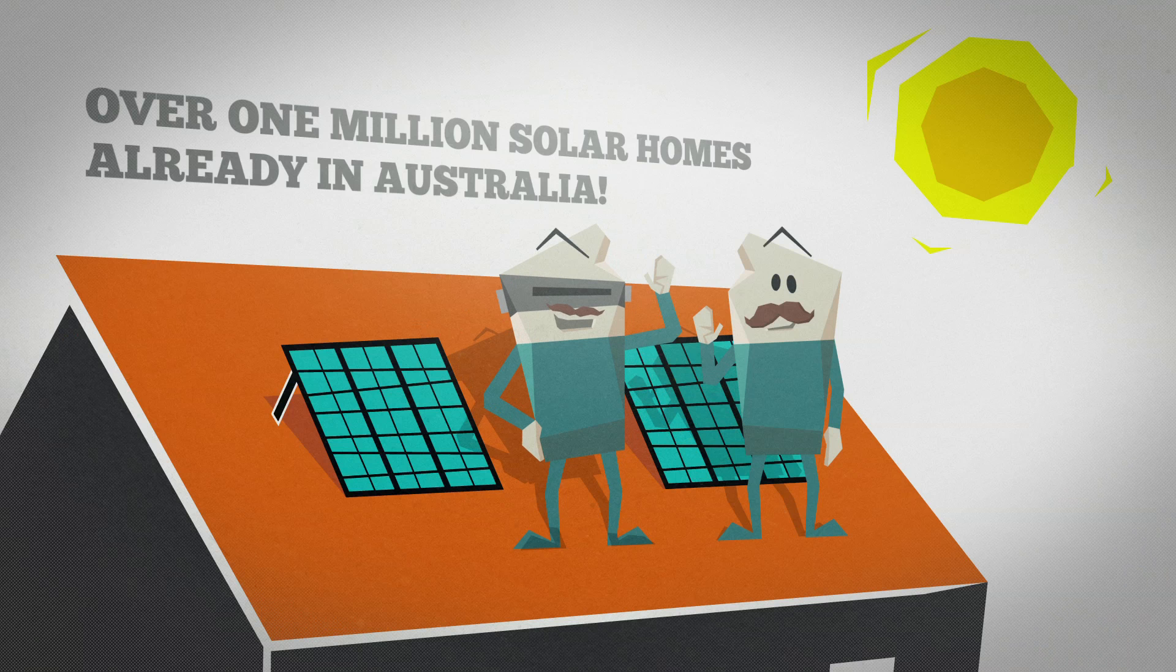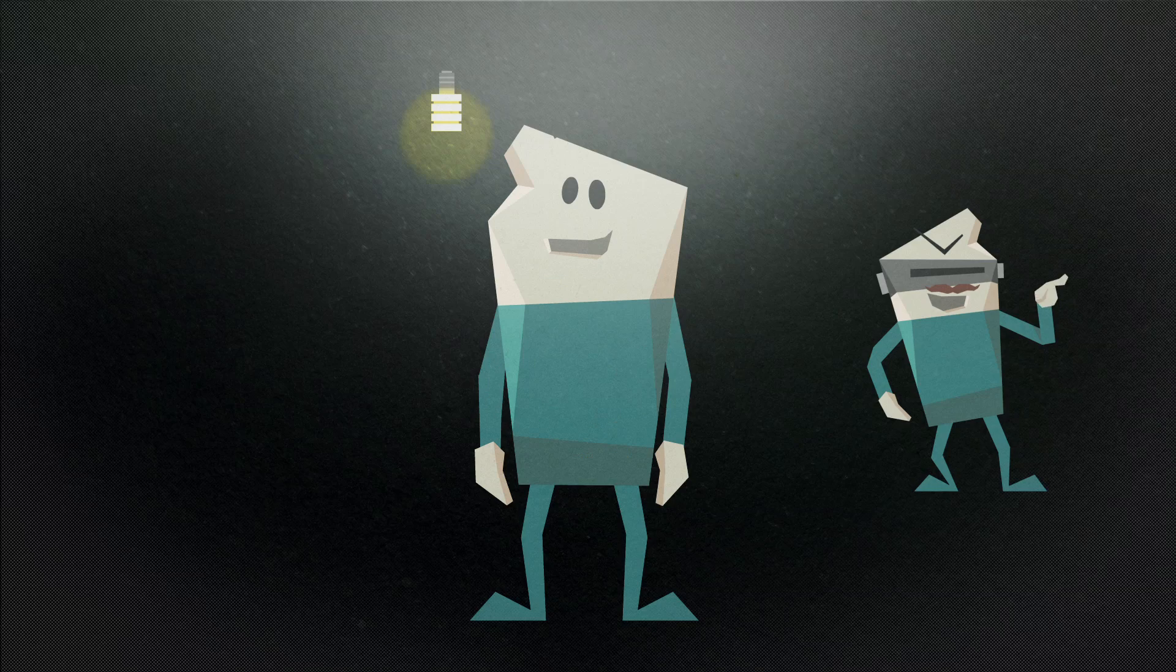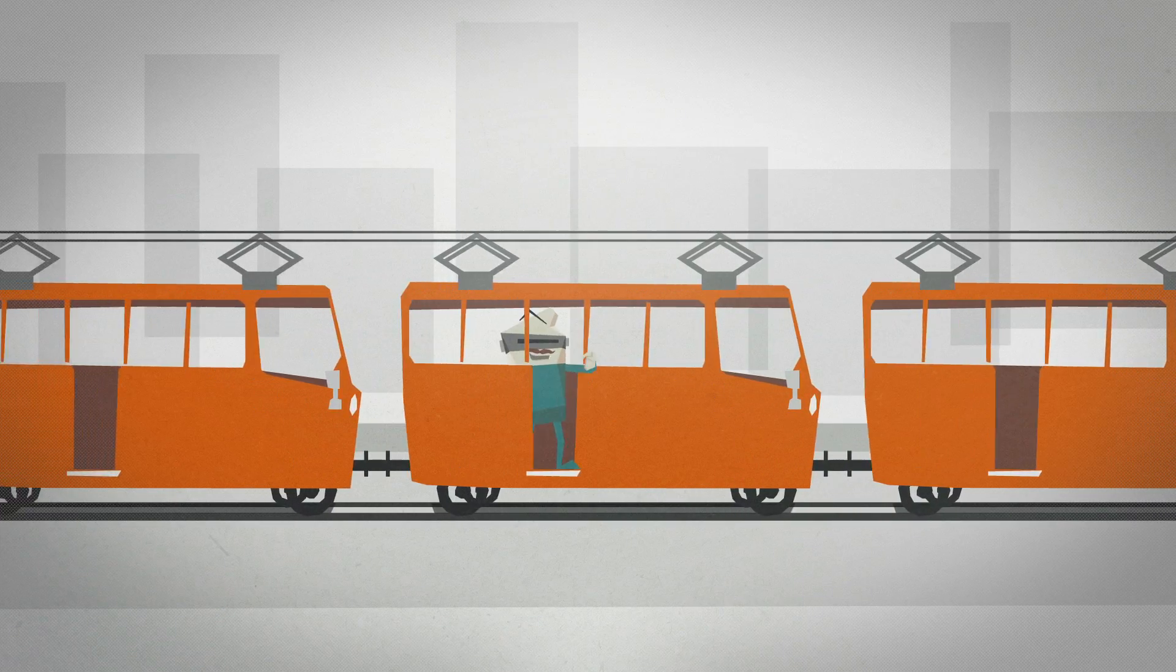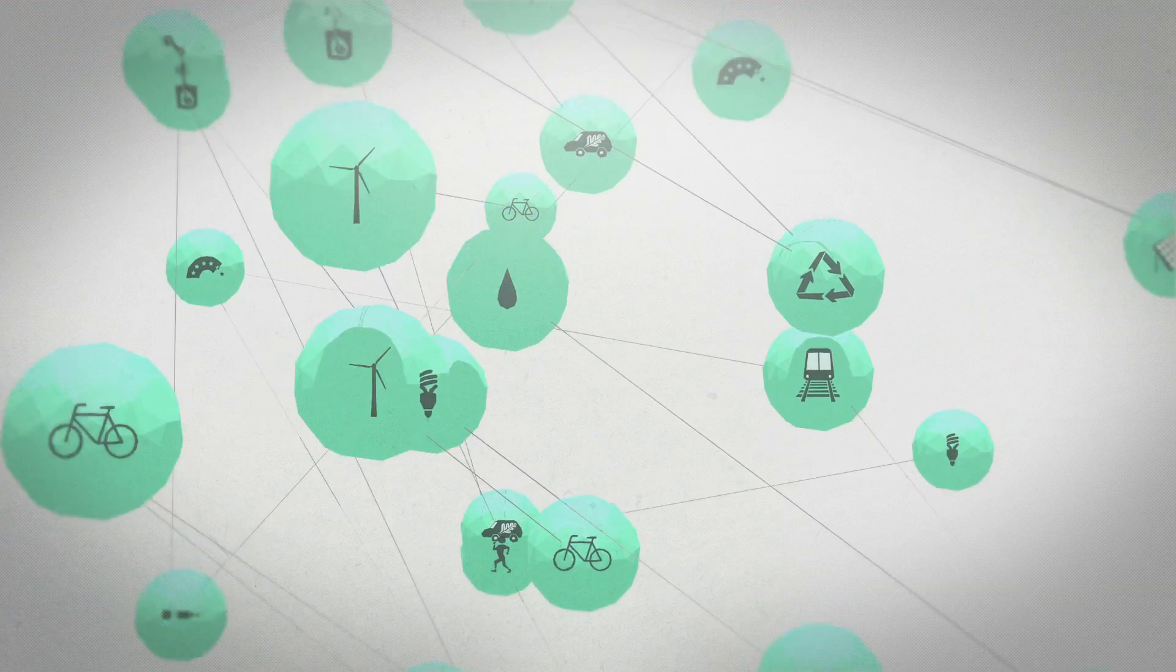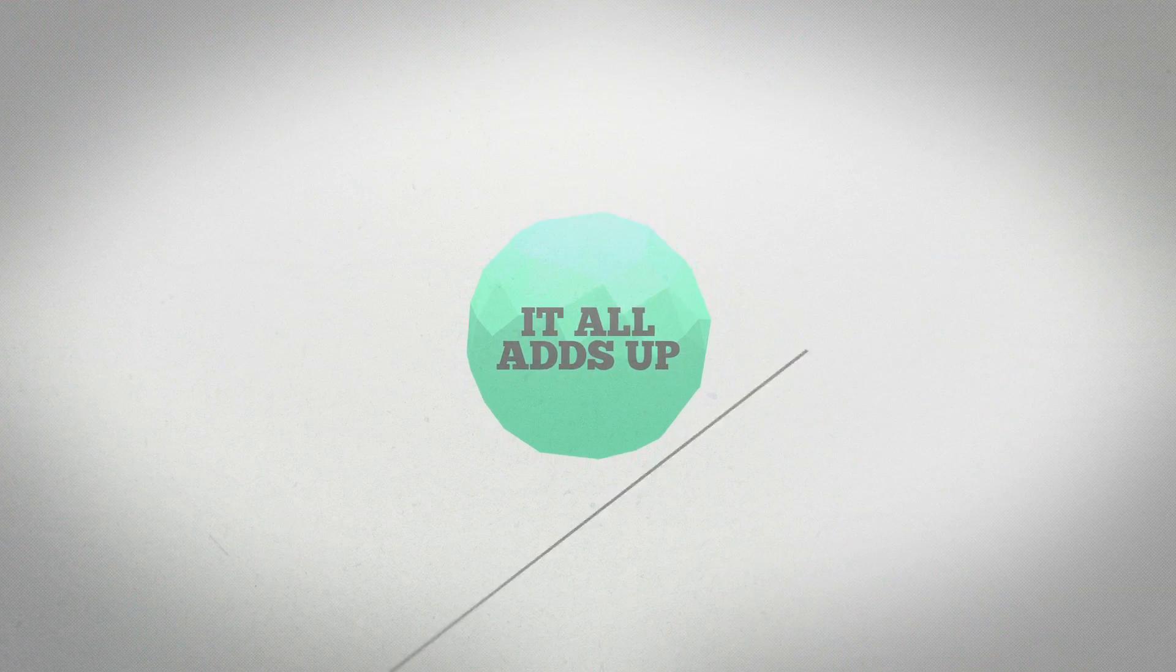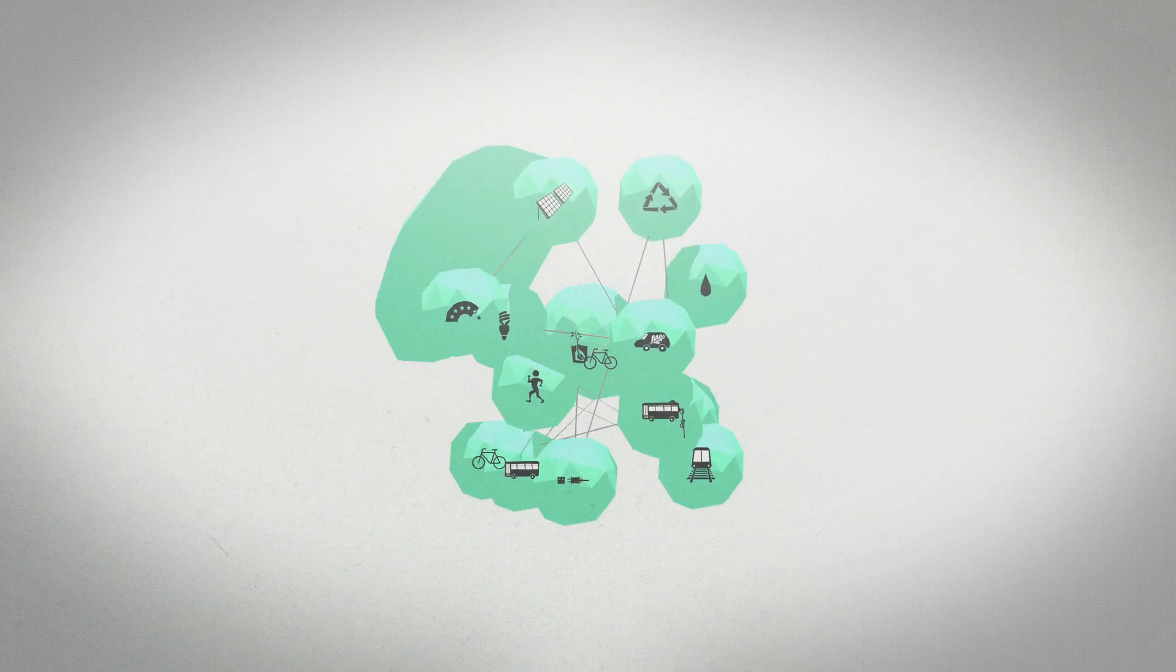Homeowners are putting in solar panels. People are switching to energy efficient lights, catching more public transport, riding bikes. Together, all these actions add up, but we need to do much more and more quickly to protect future Frankie and all our future selves.